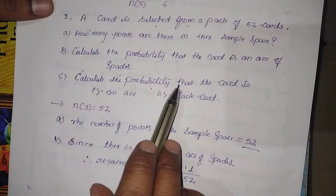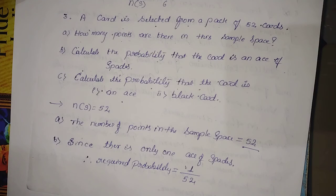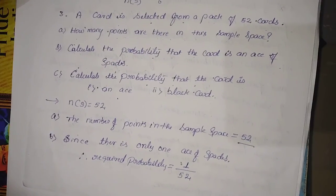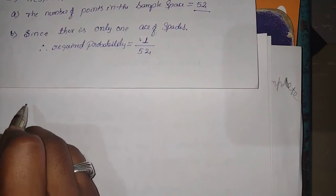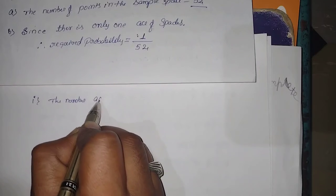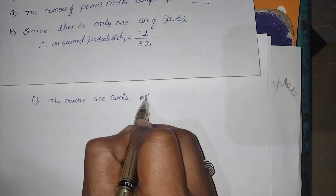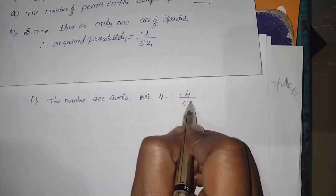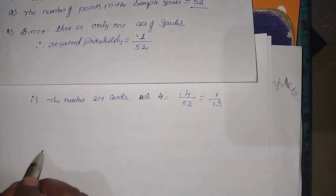Third sub-question has two parts: the probability of an ace card and the probability of a black card. For ace cards: there are 4 ace cards out of 52, so P(ace) = 4/52 = 1/13.